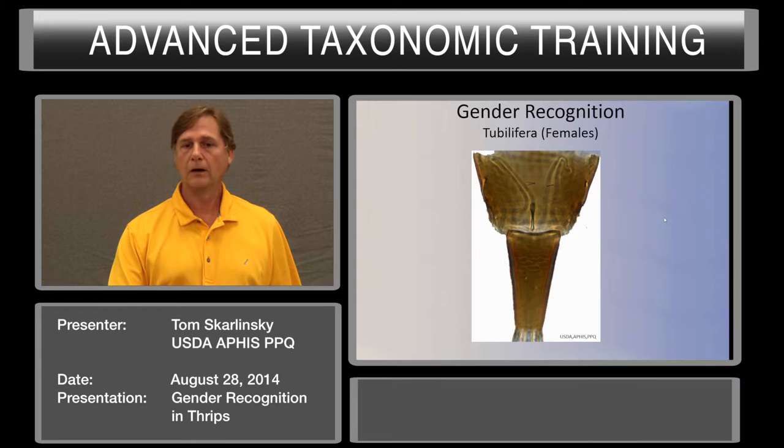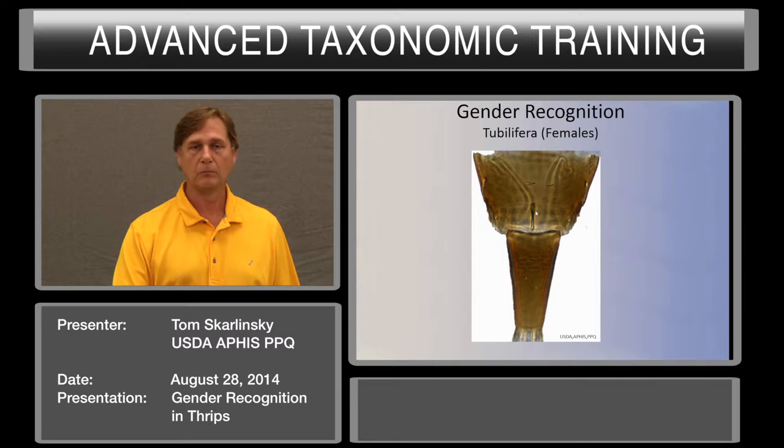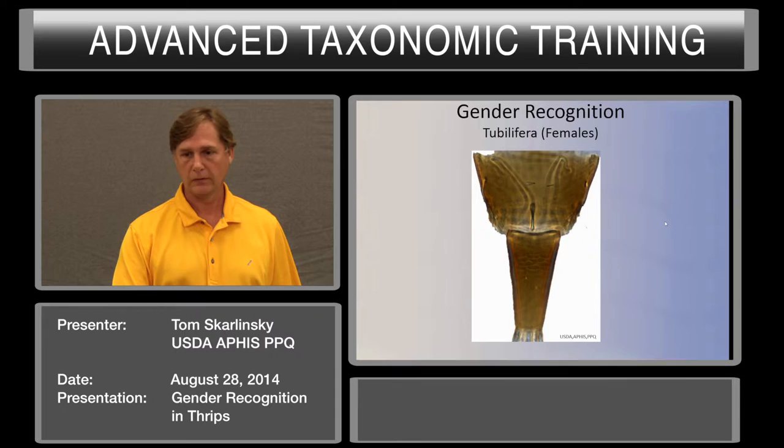Now in the Tubulifera, the females — you're going to identify those by this little sclerotized area right here. Some texts call it a fustus; others describe it as an eversible shoot-like area for depositing the eggs on the surface of leaves.